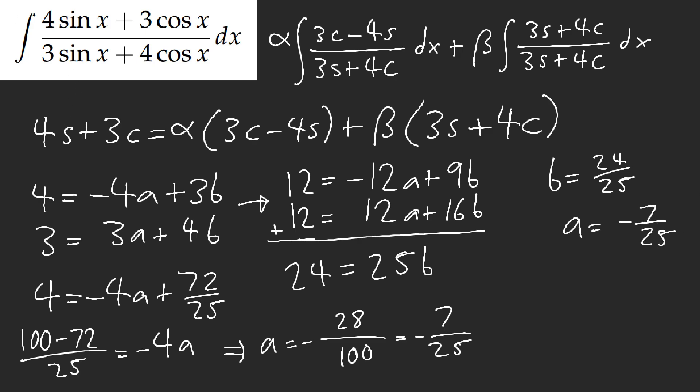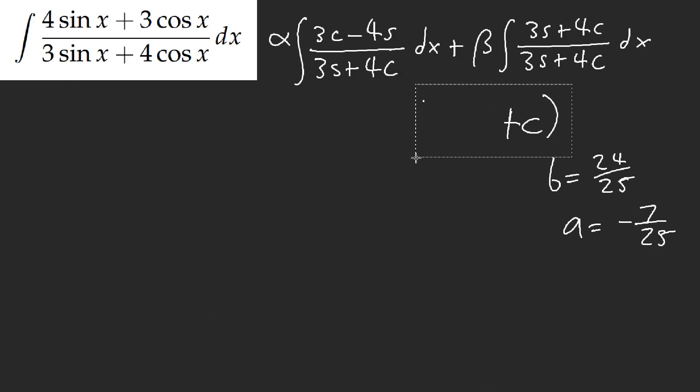Let's clean this up now, because I don't want to see any of this. This is nasty. We're not even integrating. This is just linear algebra. But, now that we know our answer, we know what a is. So, now our answer is just negative 7 over 25 of ln of 3 sine of x plus 4 cosine of x and then plus 24 over 25 x plus c.